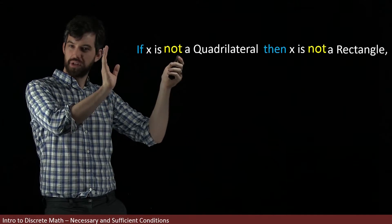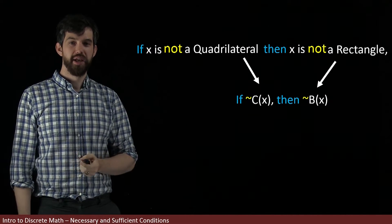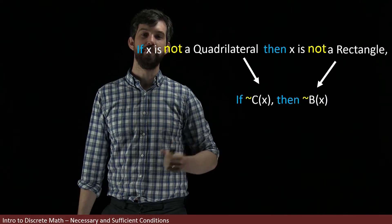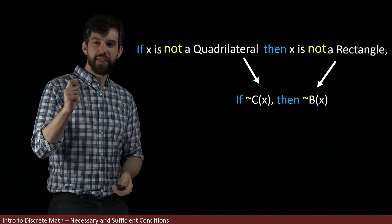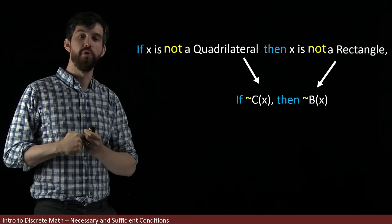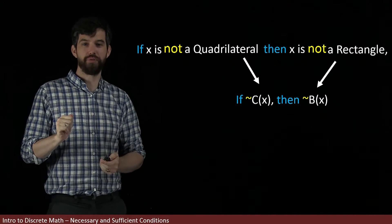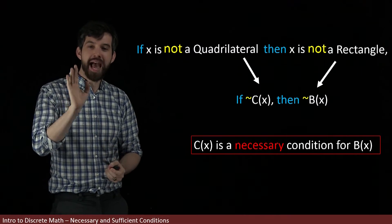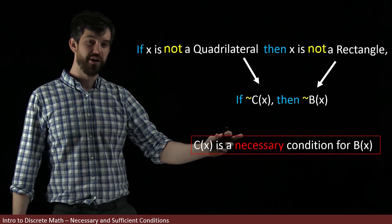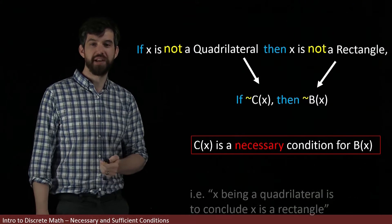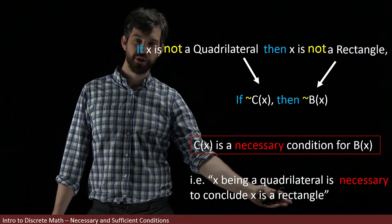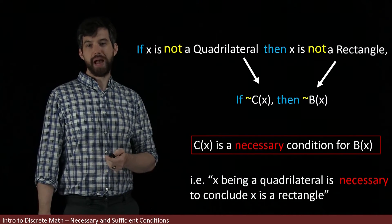In its contrapositive form, the logical structure looks like this: if not C(x), then not B(x). The point is that it is mandatory for my shape to be a quadrilateral if I ever hope for it to be a rectangle. Another way of saying this is that it is necessary to have the property C(x) in order to have B(x). In the language of our example, it is necessary for a shape to be a quadrilateral in order to conclude that it's a rectangle.